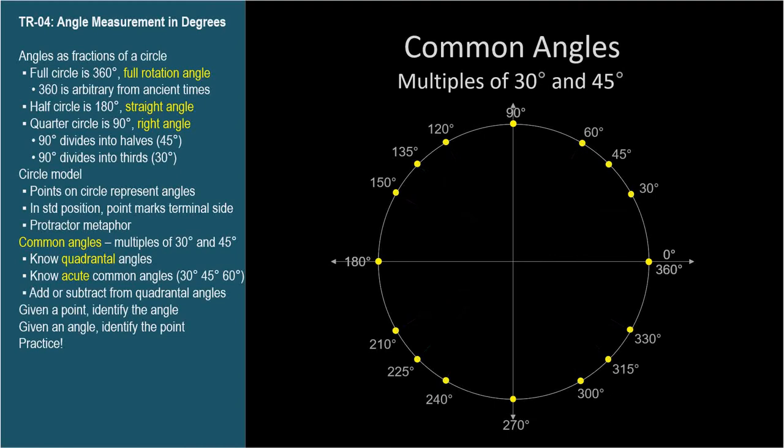Given an angle measure for one of these common angles, you must know or be able to figure out quickly the corresponding point. And given a point, you must know or be able to figure out quickly the corresponding angle.